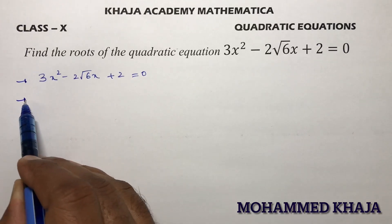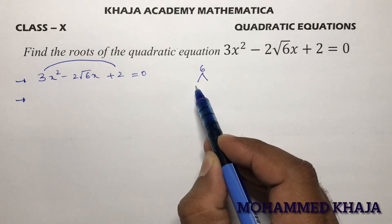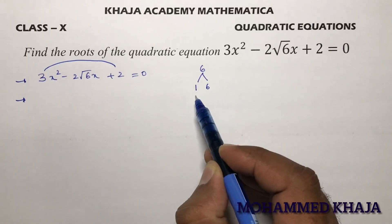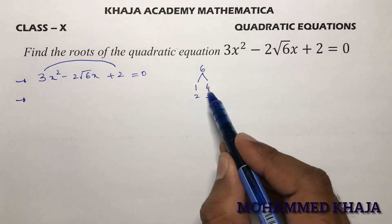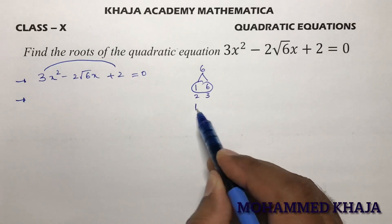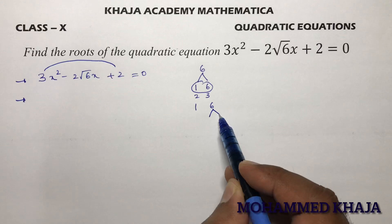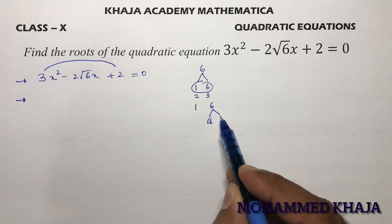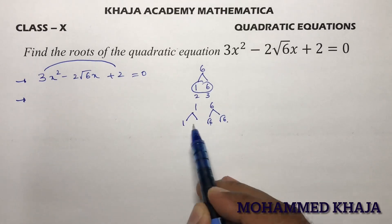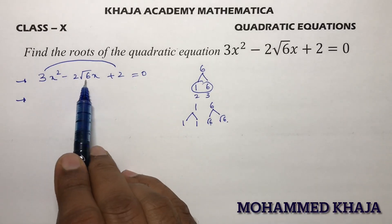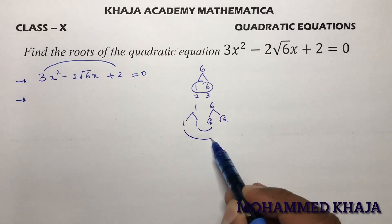Here 3 times 2 is 6. The factors of 6 are 1×6 and 2×3. We need √6 to split the middle term. Taking the pair 1 and 6: write 6 as √6 × √6, and 1 as 1×1. So we split -2√6x into -√6x - √6x.